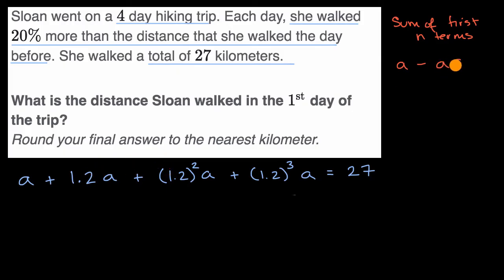So, our first term times our common ratio to the nth power, all of that over one minus the common ratio. In other videos, we explain where this comes from. We prove this. But here, we can just apply it.